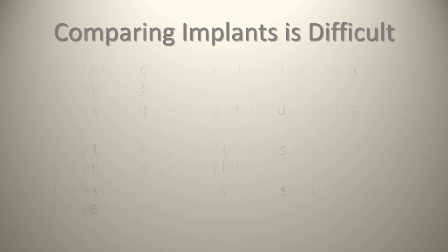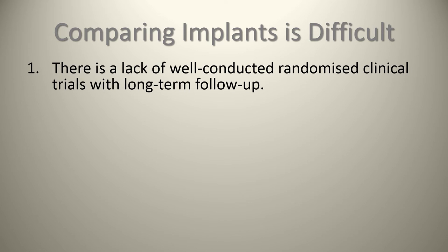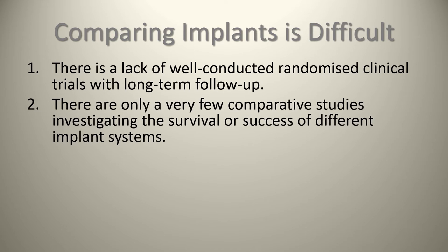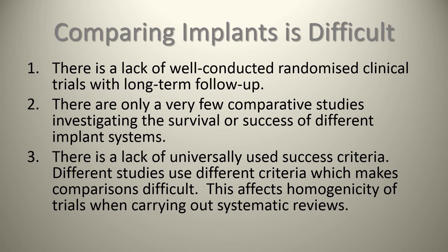Comparing implants can be difficult in many ways. A lot of times I'll speak with colleagues at different conventions, meetings, and sometimes on the golf course, talking about different implant systems and cases. The problem with comparing implants is that there's a lack of well-conducted, randomized clinical trials with long-term follow-up for many products on the market. There are only a very few comparative studies investigating the survival or success of different implant systems. There is also a lack of universally used success criteria, and different studies use different criteria, which makes comparison very difficult and affects the homogeneity of trials when carrying out systematic reviews.